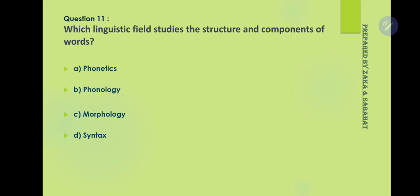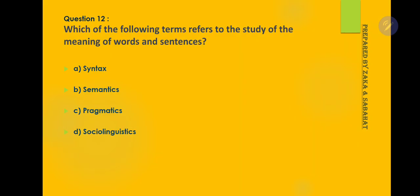Question 11: Which linguistic field studies the structure and components of words? Option C is the correct answer — morphology. Question number 12: Which of the following terms refers to the study of the meanings of words and sentences? The answer is semantics, option B.